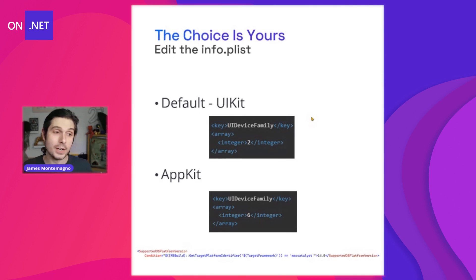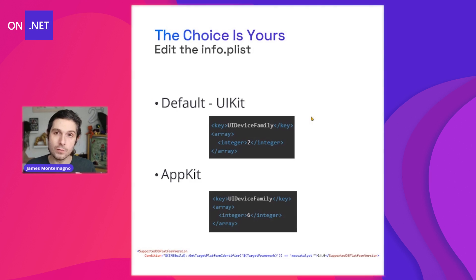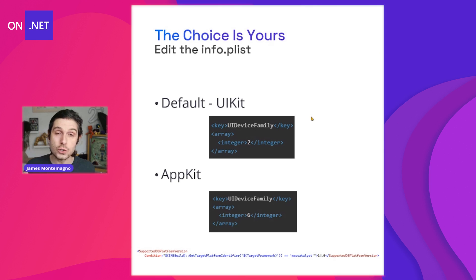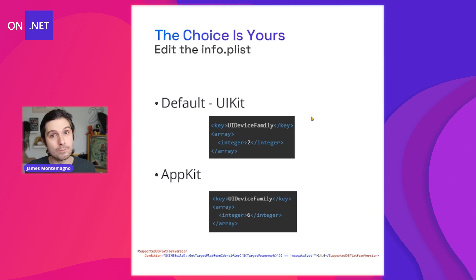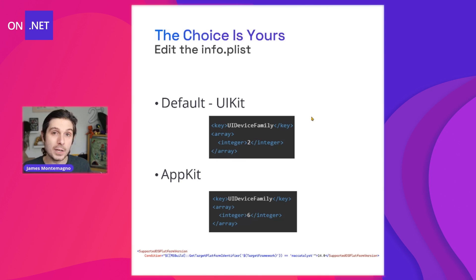This is controlled via an Info.plist option under UIDeviceFamily. You'll see values one and two — that is iOS and iPadOS — and integer two controls the UIKit for iPad. If you want to switch that over to use AppKit, which you can easily do in your existing application today, switch that over to integer six. That controls whether it is AppKit or UIKit. So if you want UIKit out of the box, nothing to change — everything is there by default. If you need AppKit look and feel for your Mac apps built with .NET MAUI, just switch that flag.